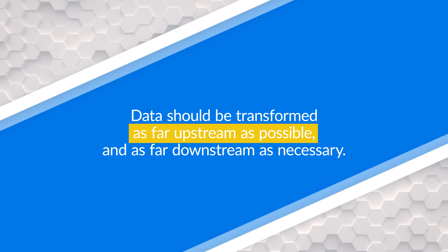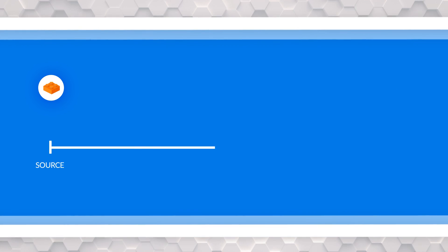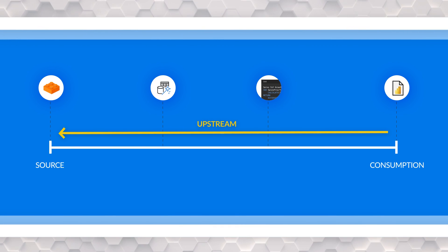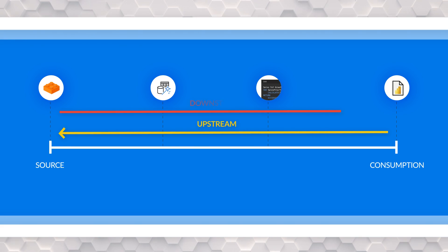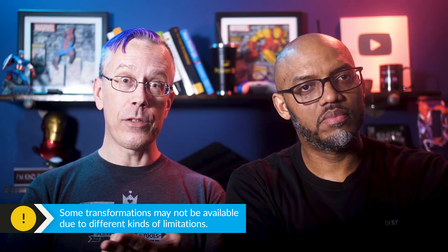So the maxim states that data should be transformed as far upstream as possible and as far downstream as necessary. In this context, upstream means closer to the source of the data — as close as possible to the system or process where the data is being created. And as far downstream as necessary could mean that it's not technically possible to transform something until you have the right data or the right context. Or it may mean that you don't have permissions to update the data warehouse or the OLTP system, so there are organizational or political reasons that could force you to do something further towards the consumption point or further downstream.